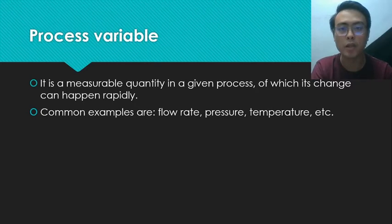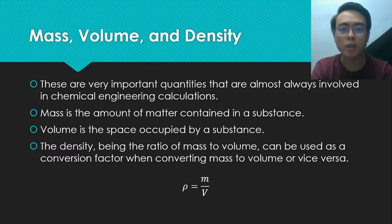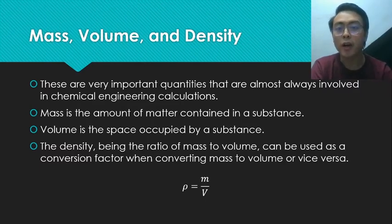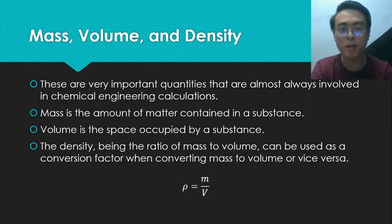We will discuss each of the most common process variables. First is the trio of mass, volume, and density — very important quantities almost always involved in chemical engineering calculations, mostly because material balance deals with mass. Mass is the amount of matter contained in a substance; volume is the space occupied by a substance; and density, being the ratio of mass to volume, can be used as a conversion factor between the two.